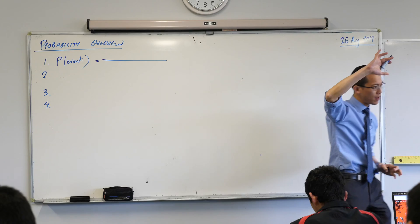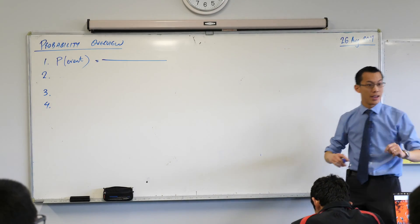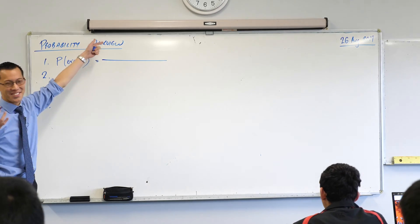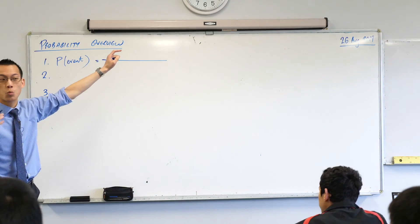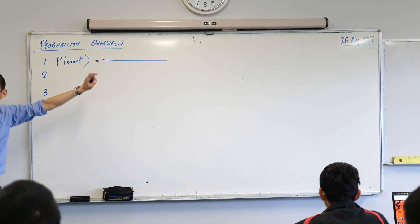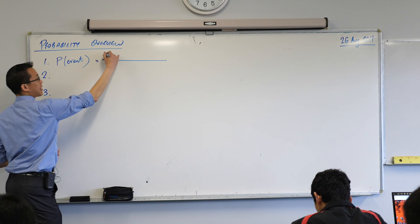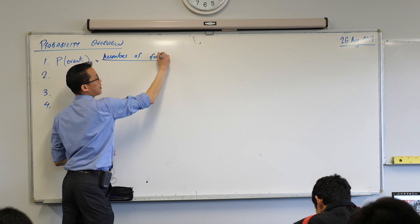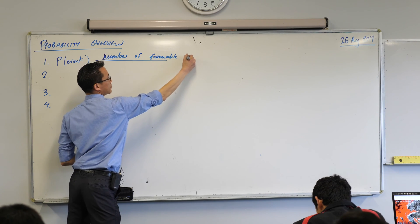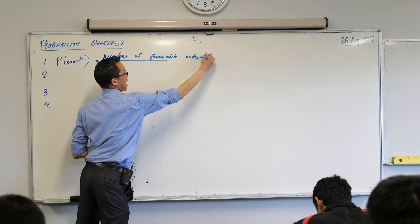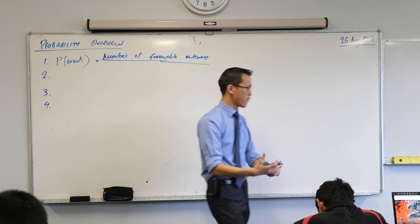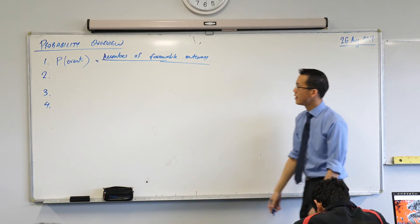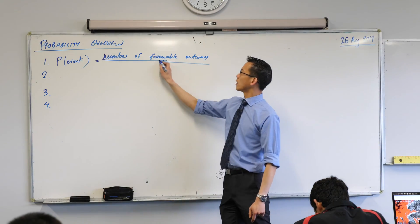If you had an event with a probability of zero what would that mean? Never going to happen. You had an event that had probability of one it would mean 100% certainty. It's definitely without a shadow of a doubt going to happen. So our probabilities always lie between zero and one. They are a fraction. What goes on the top on the numerator of our fraction? Number of favorable outcomes. Thank you. Can we all write that down just as Anuj said? So these are the outcomes that we're interested in, the favorable outcomes, the outcomes that make that event take place.